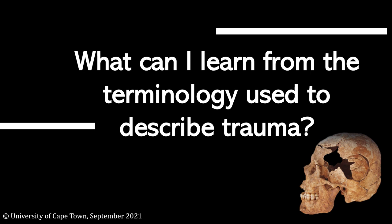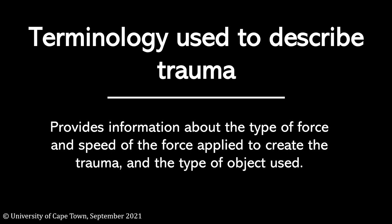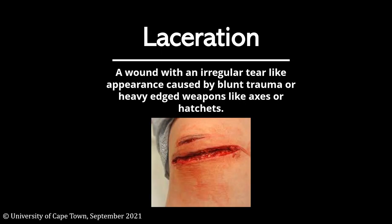What can I learn from the terminology used to describe trauma? The terminology used to describe trauma provides information about the type of force and the speed of the force applied to create the trauma. It also provides information about the type of object used. Let's look at some examples of different wounds and what their causes may be based on their names.